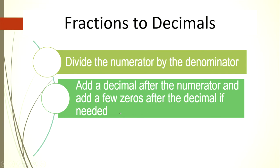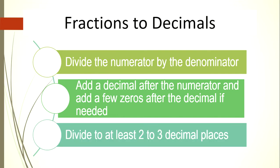We need to add zeros whenever the dividend cannot be divided by the divisor. The last step is to divide to at least two to three decimal places — in our case, always express it in two decimal places.